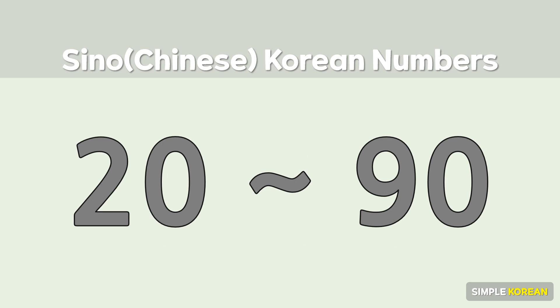Counting 20 to 90 is also easy. For example, the number 20: we say 2 first and then say 10. It is like 2 times 10. Let's read 20 to 90.